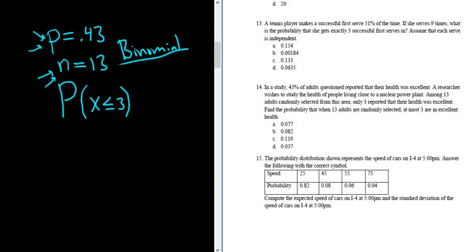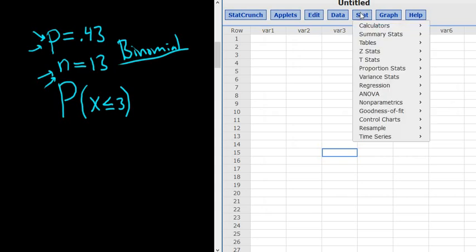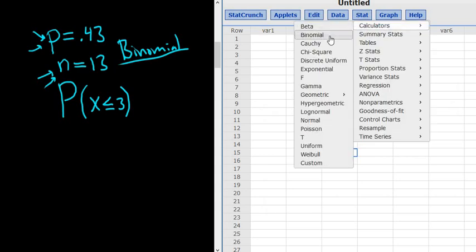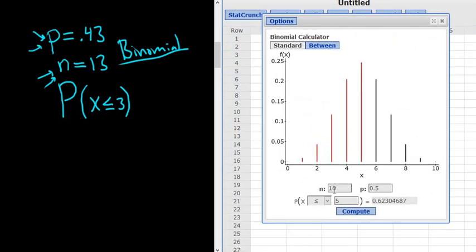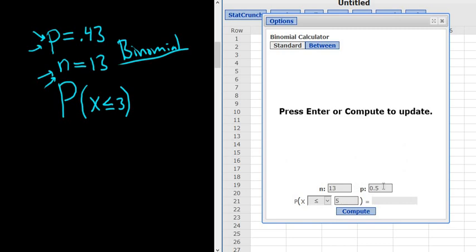All right, so now we'll go to StatCrunch. So we go to Stat, Calculators, Binomial. And then you type in the N. So N here is 13. P is 0.43. And this is less than or equal to 3.